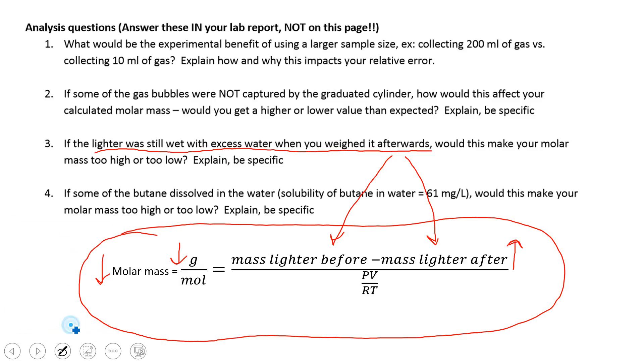If an error causes our volume, our measured volume to be lower, that's going to make my number of calculated moles lower. And when you divide by a smaller number, you'll end up with a larger molar mass.